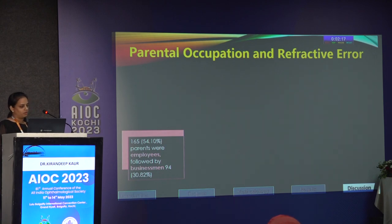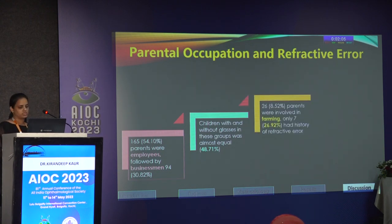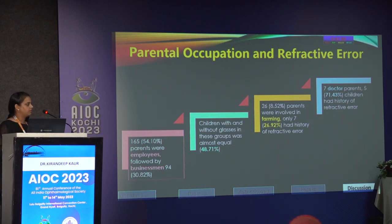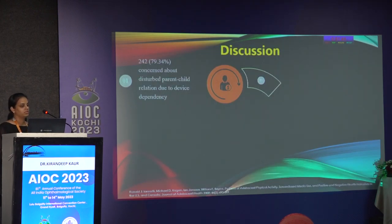Regarding the association between parental occupation and refractive error: 54% of parents were employees and 31% were businessmen, with a refractive error prevalence of 48.71% among their children. 26 parents were farmers with a prevalence of 27% in their children. 7 parents were doctors, and the prevalence of refractive error among their children was as high as 72%. Our results align with the COMET results, which found children of parents with white-collar jobs had significantly higher myopia than children of blue-collar job parents.